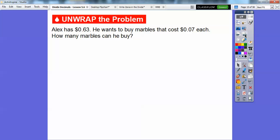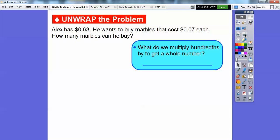Let's try this with this one. Alex has 63 cents or 63 hundredths of a dollar. He wants to buy marbles that cost 7 cents or 7 hundredths each. How many marbles can he buy? So what we're going to do is divide here. So what do we multiply hundredths by to get a whole number? So since both of these are in hundredths, this is 63 hundredths. This 7 ends in the hundredths also, so this is 7 hundredths. So to move this decimal over two places, we're going to multiply it by 100 because 100 has two zeros. These zeros tell me how many places that decimal is going to move over.